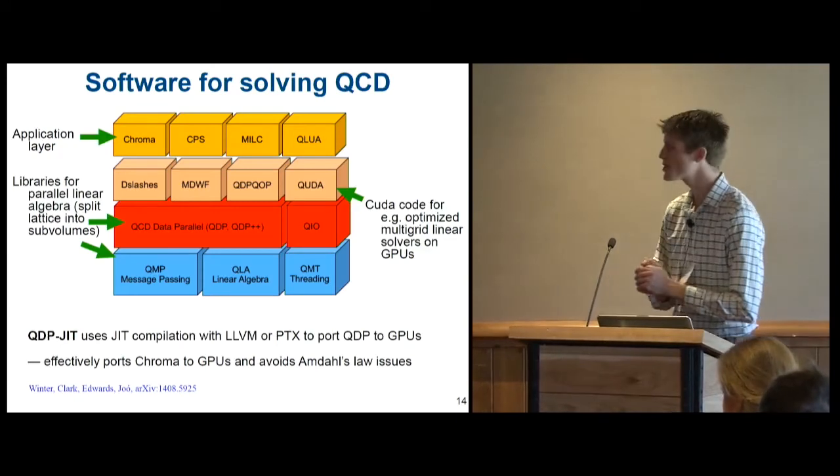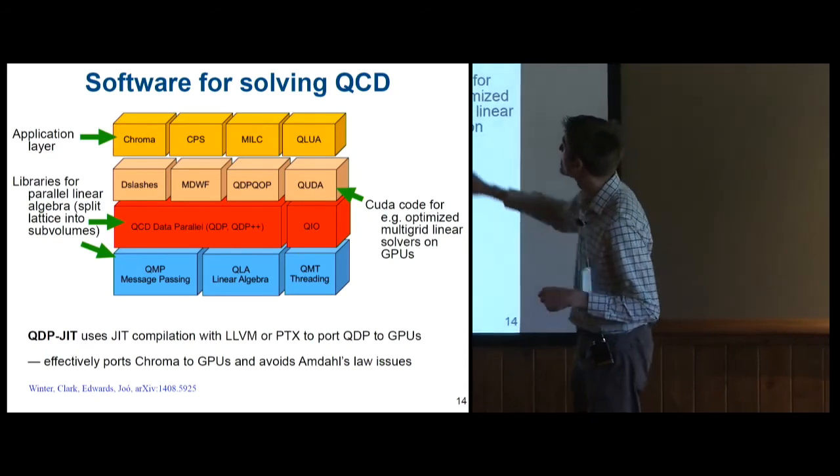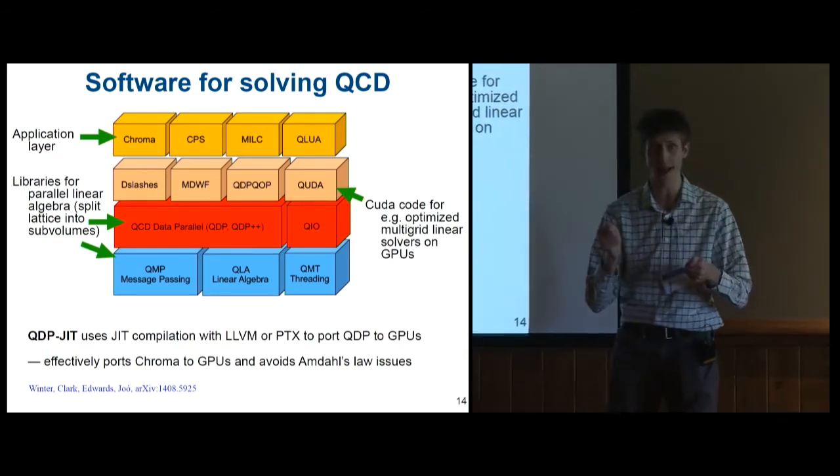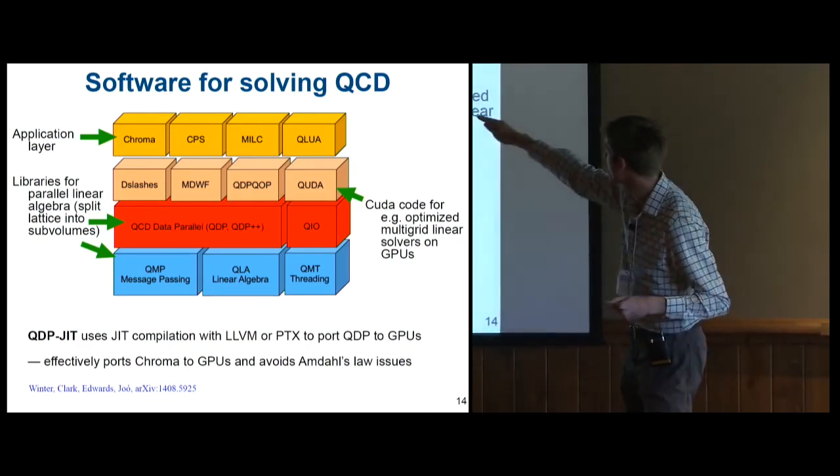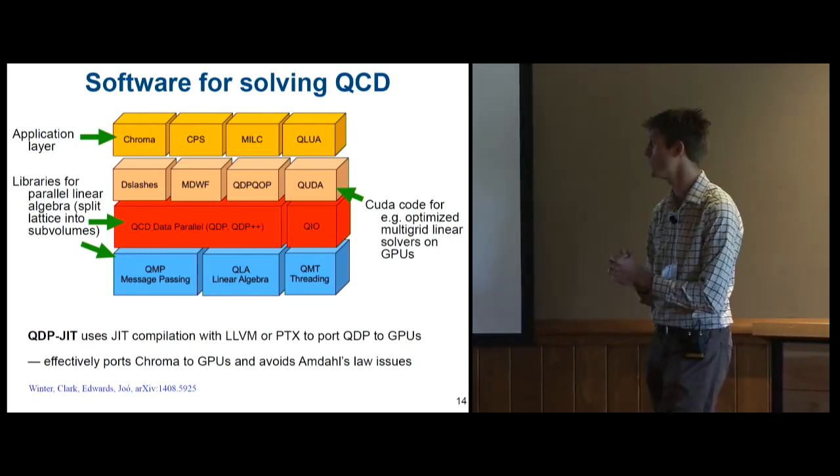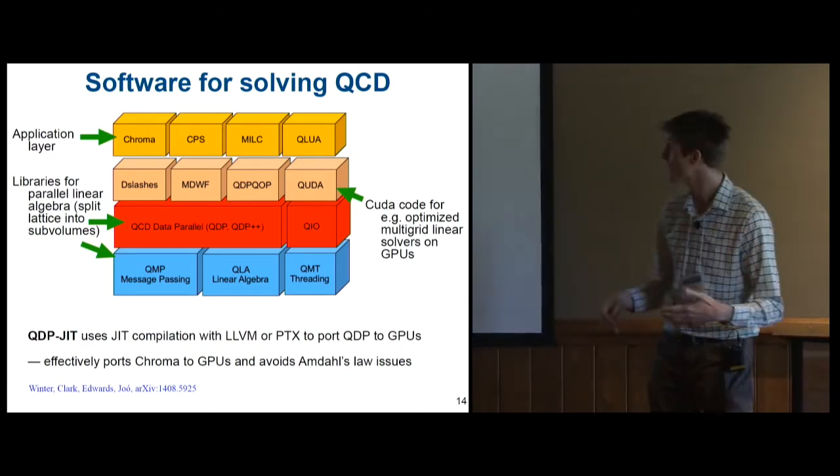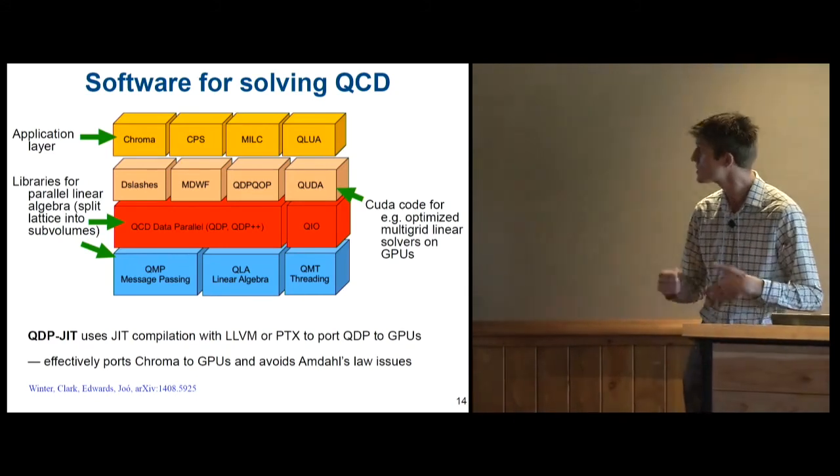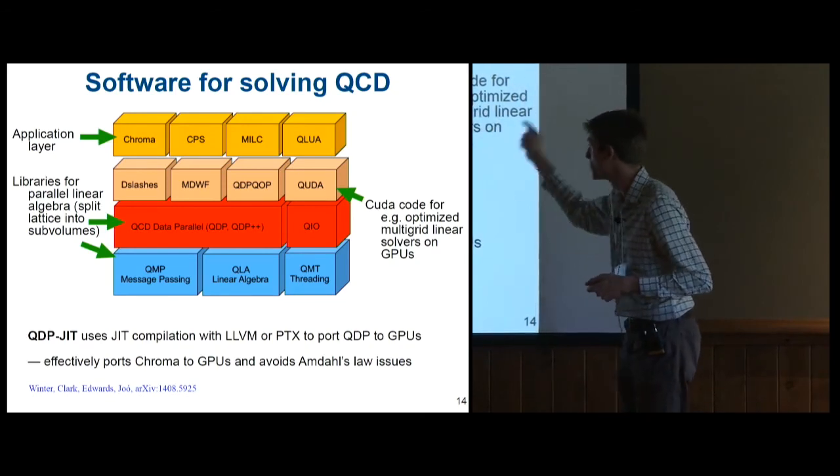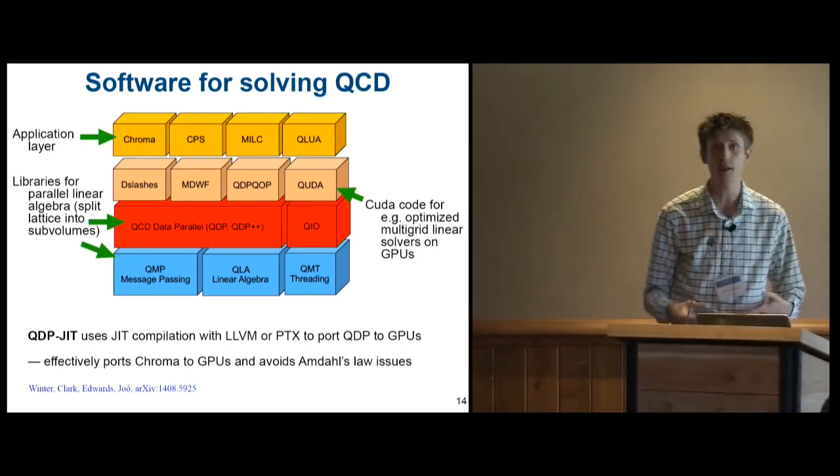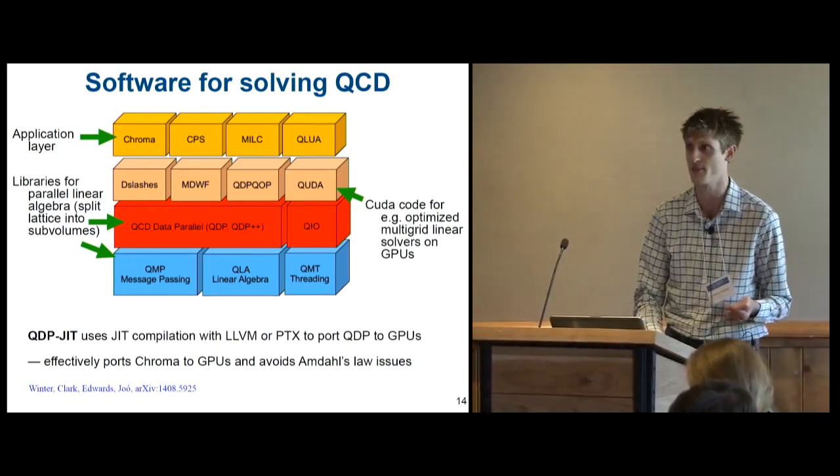And so the software that we're actually using then is developed by the US QCD Meta Collaboration. There's libraries at the bottom that handle parallelizing the lattice into sub-volumes. And then libraries in the middle that are optimized for nice solvers on GPUs. And libraries on the top that are the actual application level. And the other critical one for us not shown here is QDP JIT, which uses LLVM to compile directly down to GPU instructions, even the parts of the code that aren't specifically written in CUDA or quantum CUDA. And this JIT compilation effectively ports everything at the application level to the GPUs and lets us avoid having bottlenecks of unoptimized pieces of code slowing everything down.